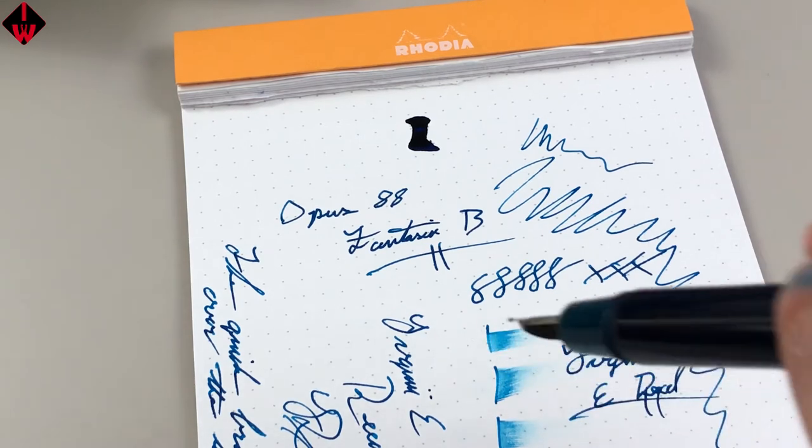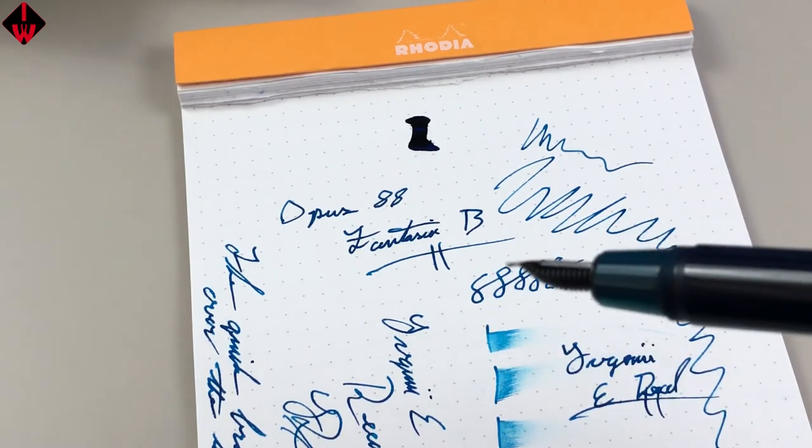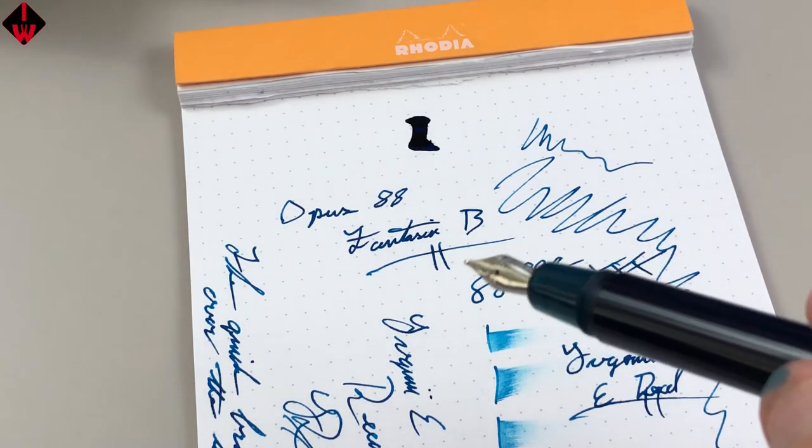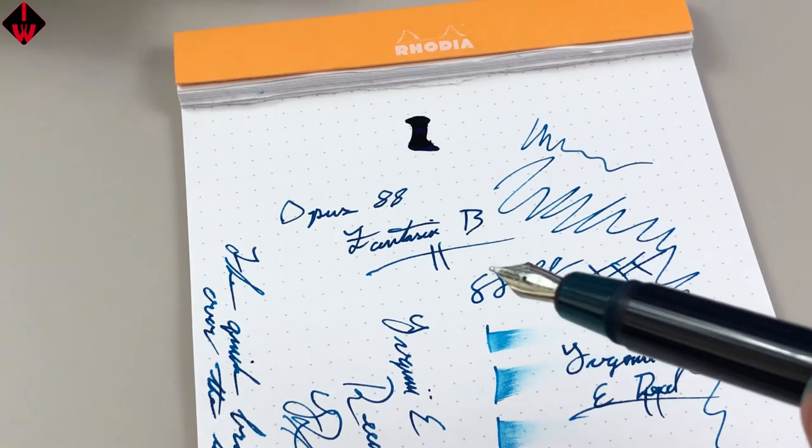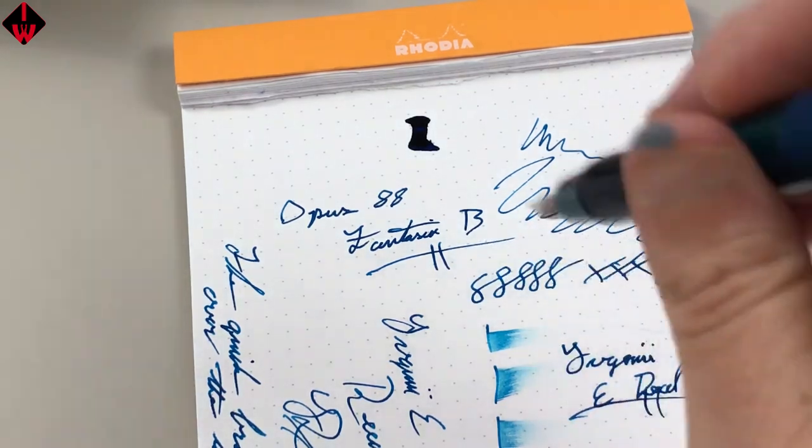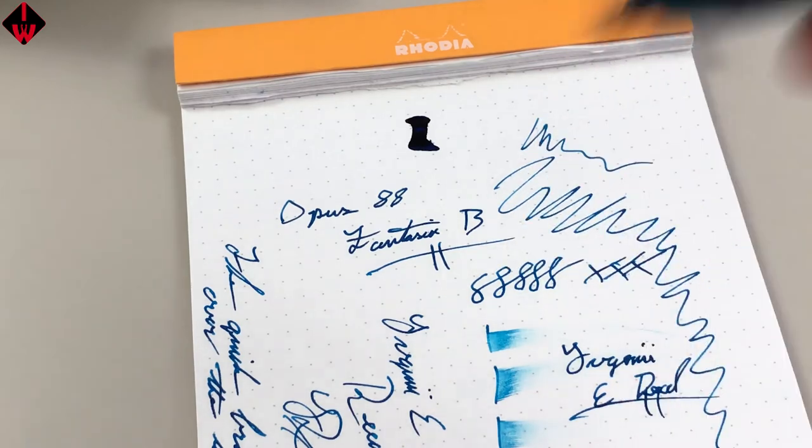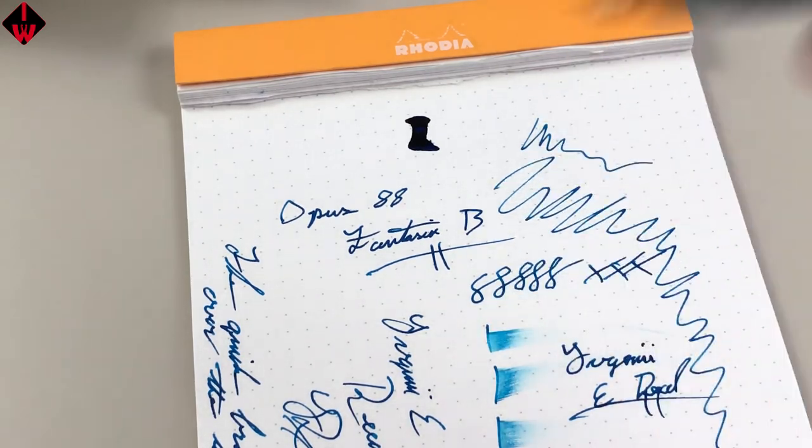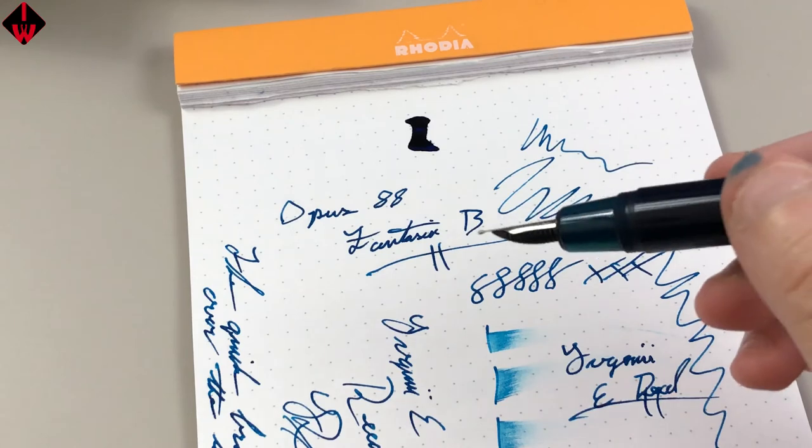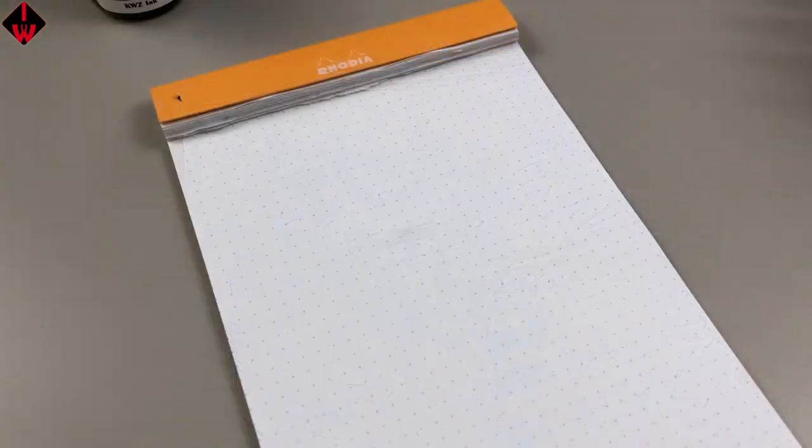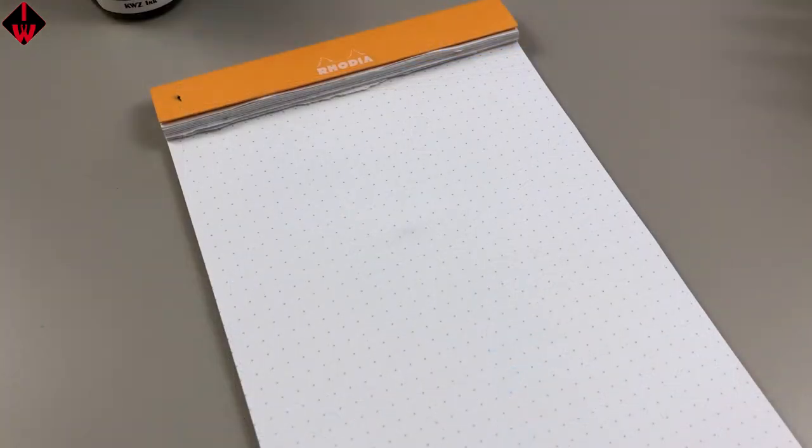Now one other thing I want to do really quick is we're going to do a little bit of a shake test. With eyedroppers I always want to see what you can do with them if they get jostled around in the pocket. Okay, there you have it. So I thought I was done filming and started to put everything up, but then I forgot one thing in the writing sample.